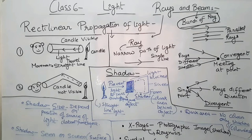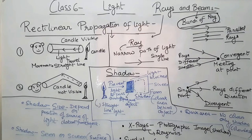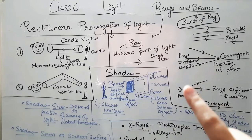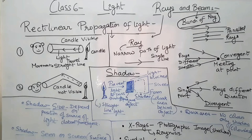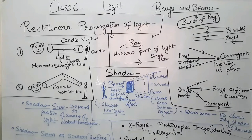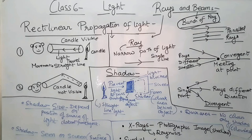If there is an obstruction in the path, a shadow is formed. Shadow is formed by the blocking or prevention of light passing through an opaque object, and a shadow appears behind the object on a screen. A shadow is a dark area behind the object. This dark area is colourless — shadows do not have any colour.